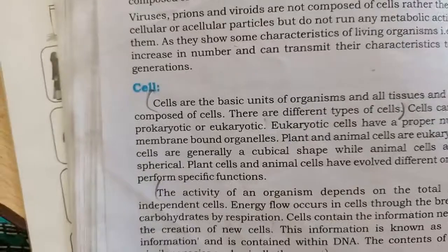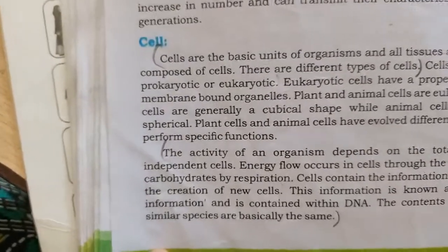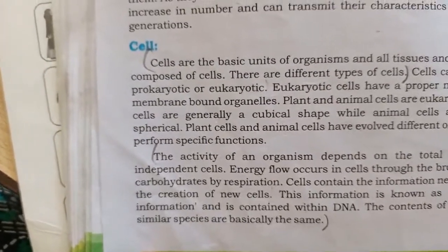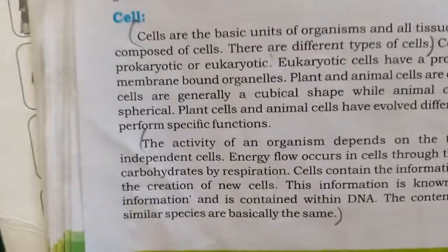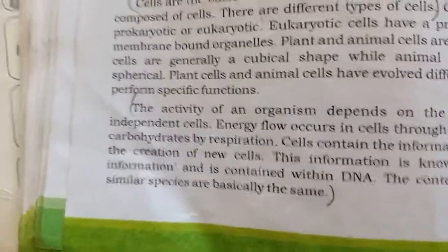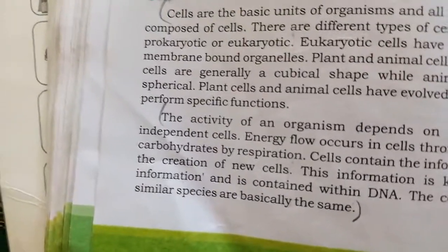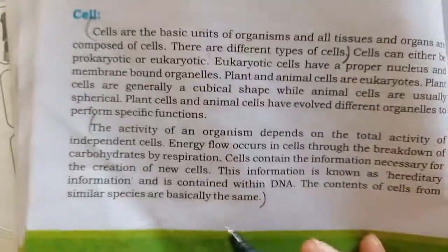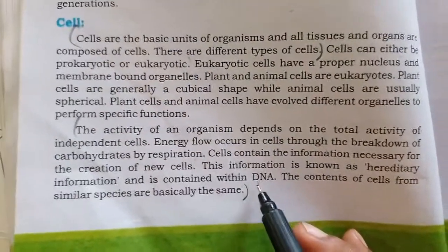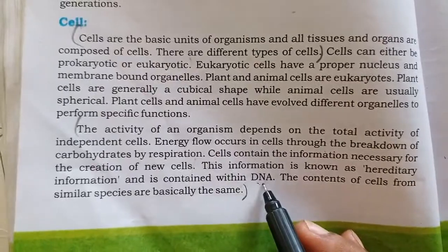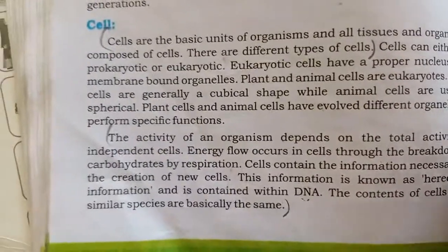The activity of the organism depends on the total activity of its independent cells and energy flow within the cells. All the genetic information — whether in a cat, rabbit, elephant, amoeba, or bacteria — is stored in DNA: Deoxyribonucleic Acid.